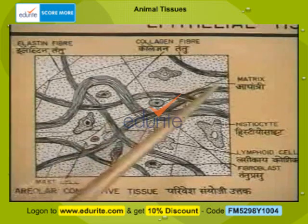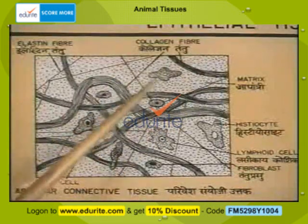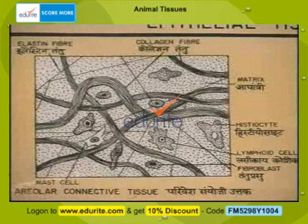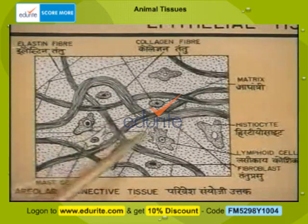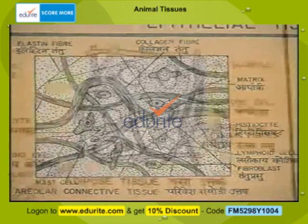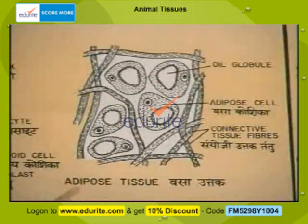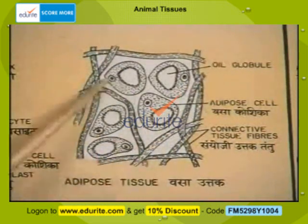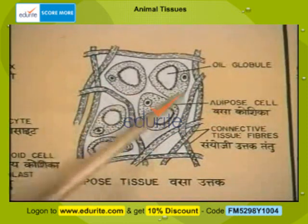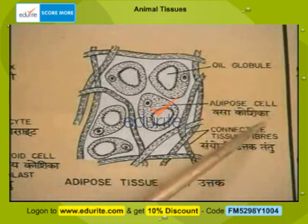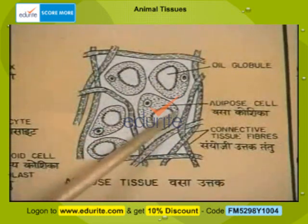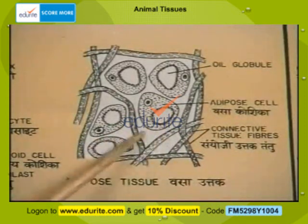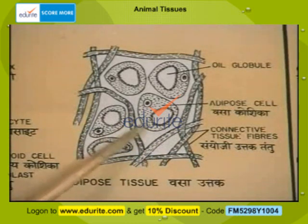Sometimes the areolar connective tissue does not have cells and matrix but instead has a dense collection of fibers. In this case, it would be called fibrous connective tissue. Adipose tissue is another kind of connective tissue. It also has a protein matrix and fibers, but contains special cells called adipose cells which are capable of storing fat granules. Adipose tissue is usually found in the subcutaneous region just below the skin and sometimes between organs.